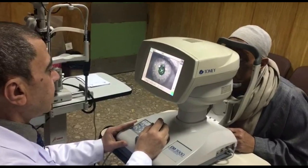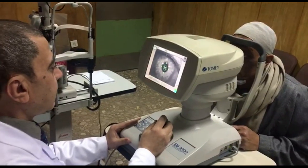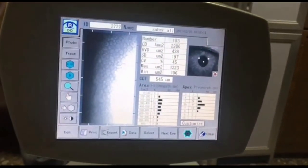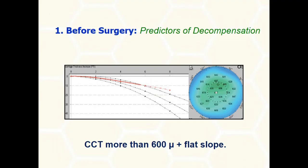Specular microscopy can assess the count, the morphology, and the pachymetry. If specular microscopy is not available, perform a Pentacam pachymetry. A central corneal thickness more than 600 microns plus a flat slope of the red line in the pachymetry curve are diagnostic of corneal edema.